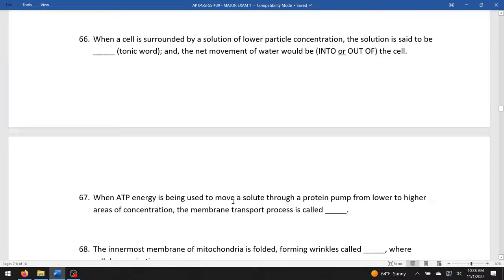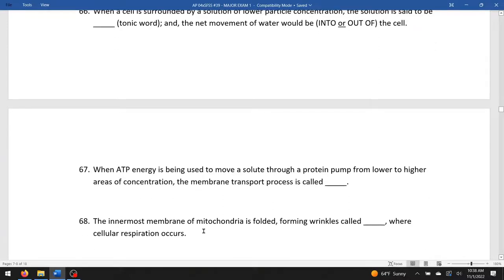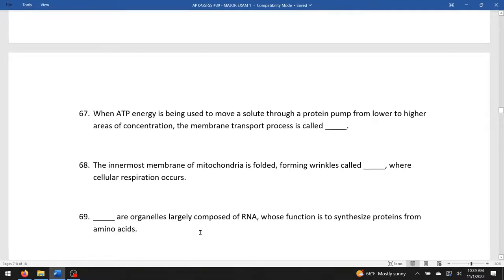When ATP energy is being used to move a solute through a protein pump from low to high, we're talking active transport. Blank are organelles largely made of RNA, whose function is to synthesize proteins from amino acids. We know the guys that make proteins are called ribosomes.